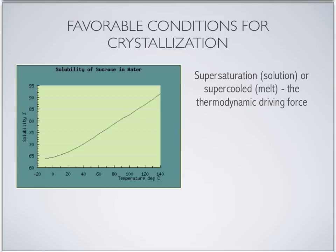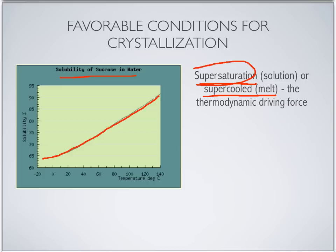Before I proceed with the discussion on the stages in crystallization, let me quickly recap. In order to form a crystal, the liquid phase must exceed the equilibrium condition and become supersaturated — for a solution — or become supercooled for a melt, such as a chocolate melt. Looking at the solubility curve for sucrose, we have the equilibrium solubility curve, and we want to achieve the supersaturation state — a point above this solubility line — where the solution is ready to start nucleation, the first stage of crystallization.